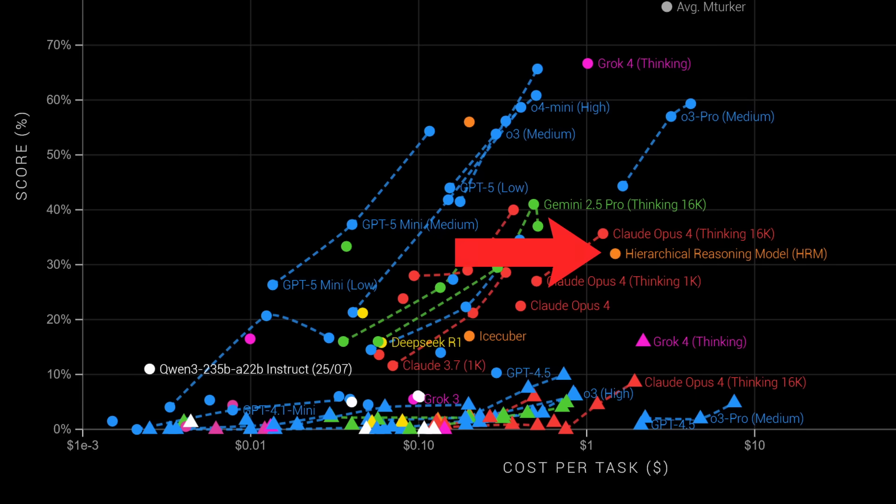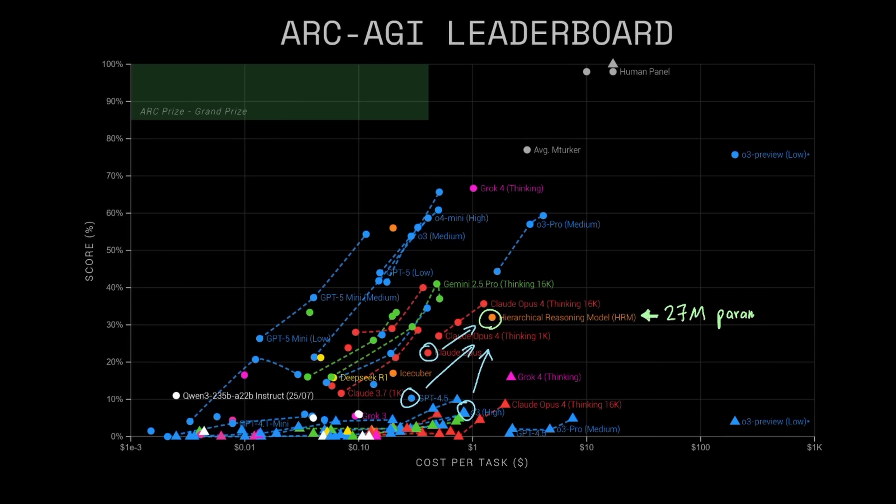Let's get one thing clear about HRM. Even though HRM beat Opus 4, GPT 4.5, and O3 in the ARC AGI benchmark, while only being 27 million parameters in size, we really shouldn't be comparing HRM against these models, and here's why.